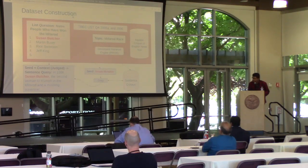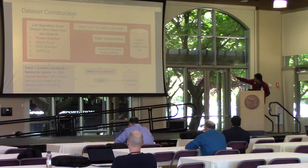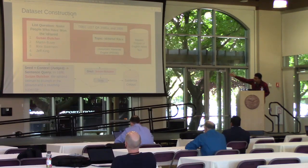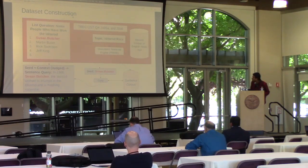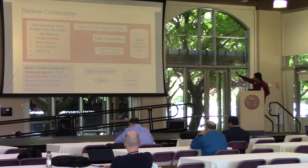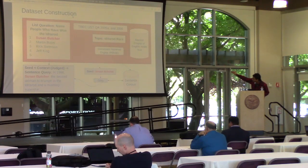How the TREC ListQA dataset is constructed — this is an example from the dataset. The topic is Iditarod race, and we also have a list question from the TREC QA dataset, which asks for the people names who are the winners of Iditarod. TREC ListQA provides us those names. Additionally, with the topic Iditarod race, they used phrase searching to retrieve a thousand documents from a large news corpus. We break down those documents into sentences, use all document information, and create a sentence corpus.